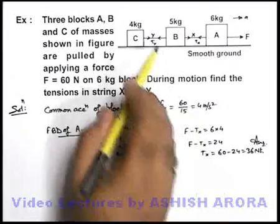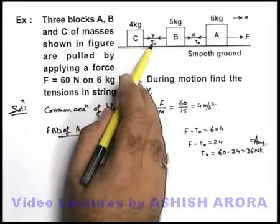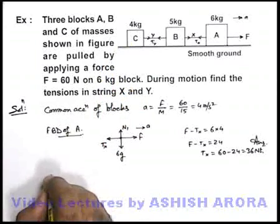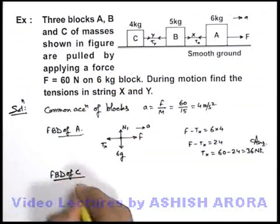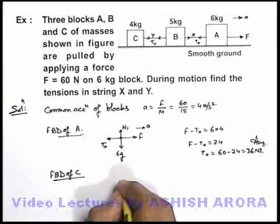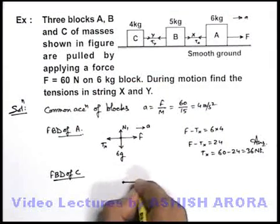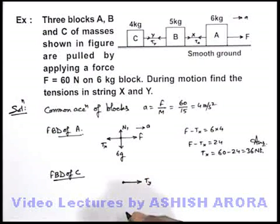Now the remaining thing we are required to find the tension in string Y. We can simply write down or draw the free body diagram of block C. If we just draw the free body diagram of block C, the only horizontal force acting on it is T_Y.